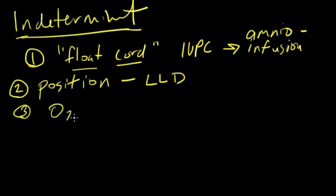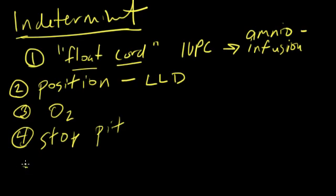You want to give mom some oxygen. You want to stop any pitocin or oxytocin. You know, if mom's having contractions that are too frequent that doesn't allow the placenta to recover completely and doesn't allow fetal oxygen status to be where it should, you can give some tocolysis.